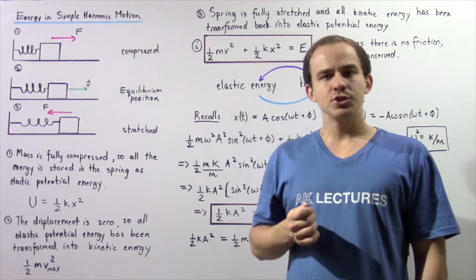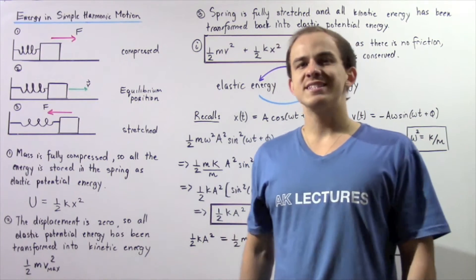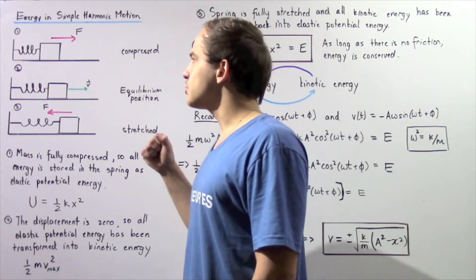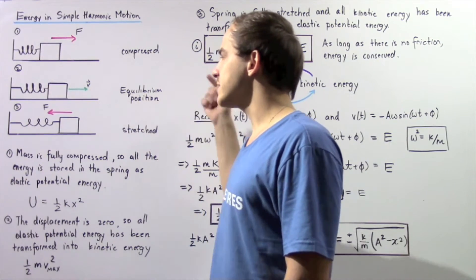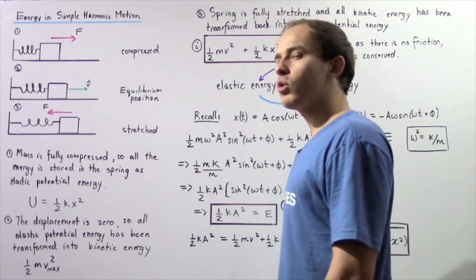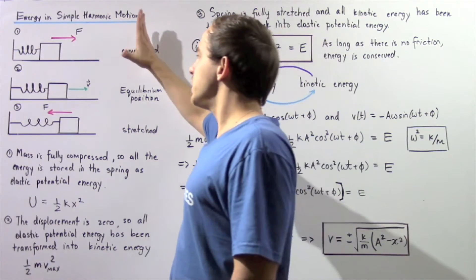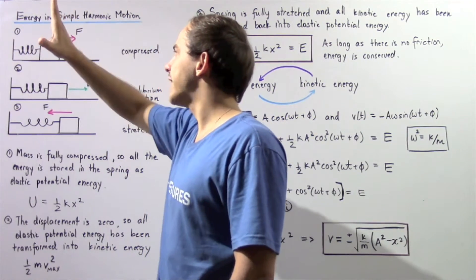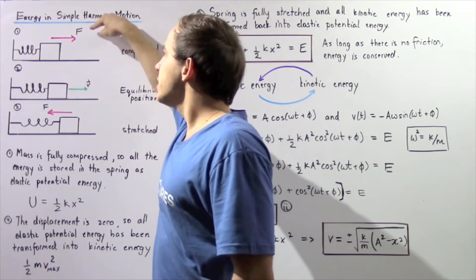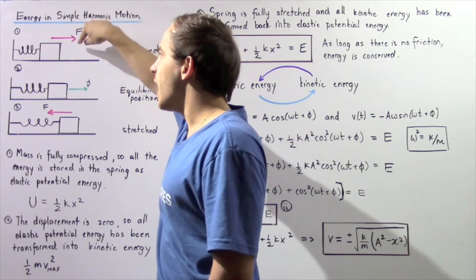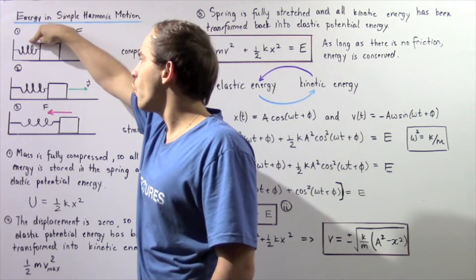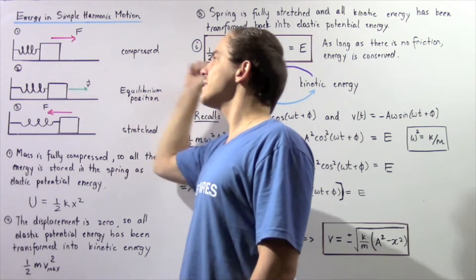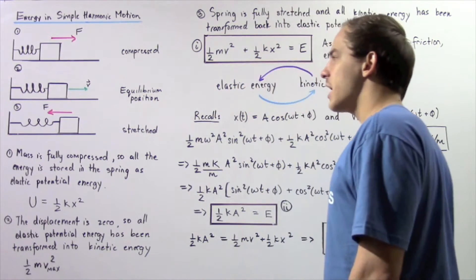Let's continue our discussion of objects undergoing simple harmonic motion. Suppose we have a mass attached to a coil spring resting on a frictionless horizontal surface. We compress the spring and then let go. At the moment we let go, there is a force acting on our mass due to the coil spring, and that force will accelerate our object in the positive direction along the x-axis.